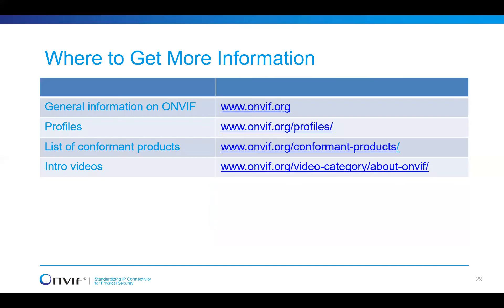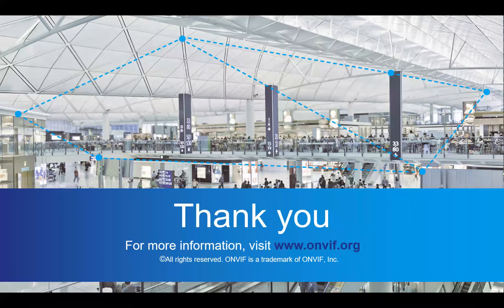You can find more information on the ONVIF website. Information about profiles and specifications can also be seen there, as well as the list of all conformant products with information about the features they support. We have over 22,000 conformant products in the database at the moment. With that, I'd like to finalize the presentation part. Thank you for listening — let's open for questions.